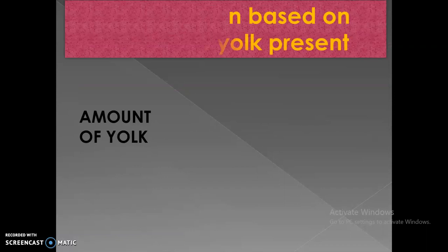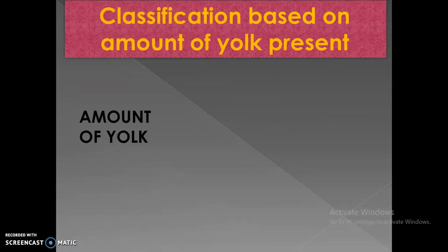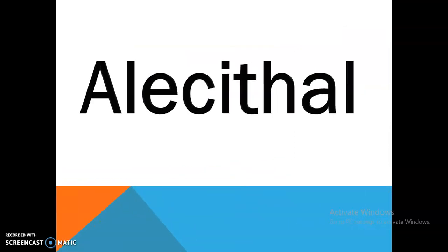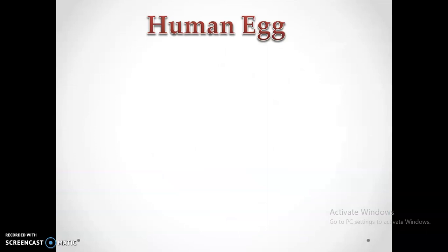The first classification is based on the amount of yolk. Based on this, eggs are classified as two types: alecithal and lecithal. 'Lecithal' is a Greek word meaning yolk. Alecithal means the absence of yolk — so the egg that has little or no yolk is described as alecithal. Examples include eutherian mammals, that is, human eggs.